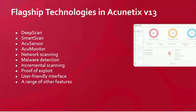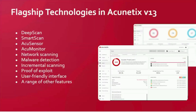Our flagship technologies — and I'll touch on these briefly before our demo engineer provides a detailed demo. Acunetix uses the following flagship technologies: deep scan, smart scan, AcuSensor, AcuMonitor, network scanning, malware detection, incremental scanning, and proof of exploit. As you'll see in the demo, we have a user-friendly interface and a range of additional features.